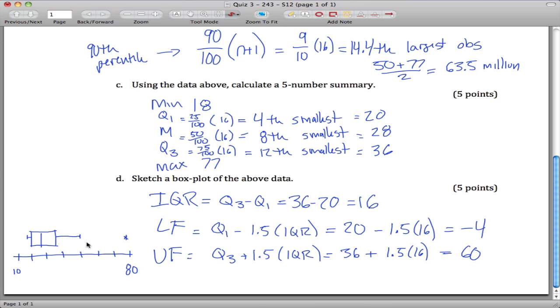So this right here would be my box plot, and here's my outlier. That's the end of this quiz.